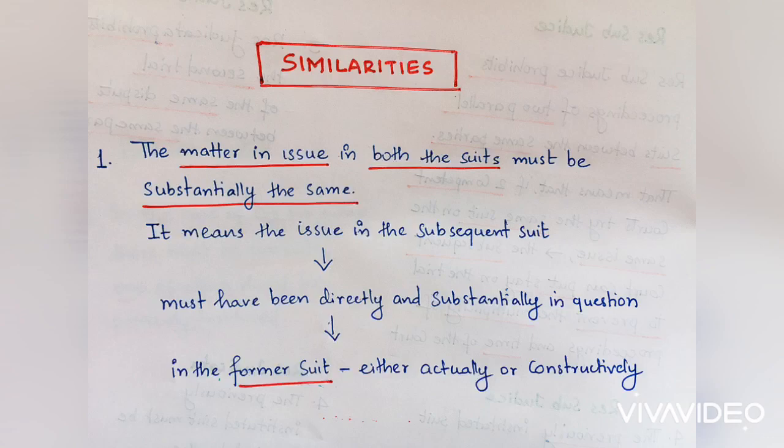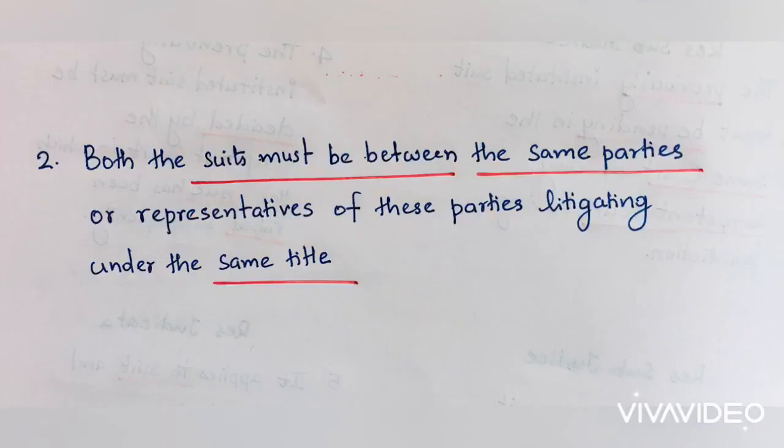Similarity number one: the matter in issue in both suits must be substantially the same. It means the issue in the subsequent suit must have been directly and substantially in question in the former suit, either actually or constructively. The second similarity is that both suits must be between the same parties or representatives of those parties litigating under the same title.